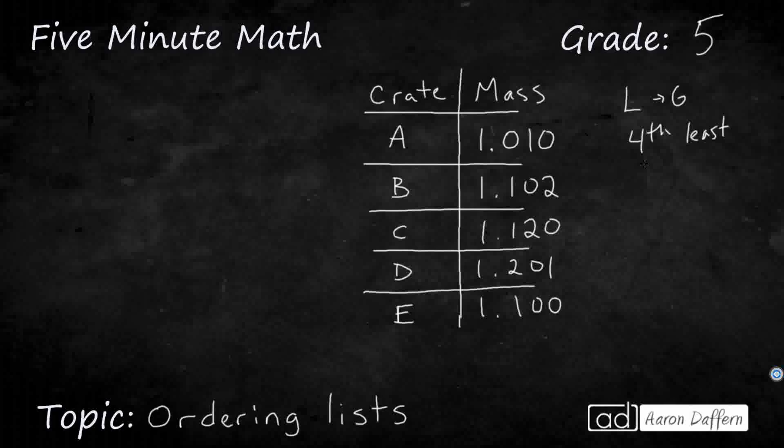Once again, that ones place is not going to help us. So I'm just looking at my numbers here. I'm going least to greatest. So I've got 10, 102, 120, 201, and 100. So I'm going to write it like this. I'll just go ahead and write it out to the thousandths place. That's my least. And that 100 is going to be less than that 102. And then I've got the 120. And I've got the 201.